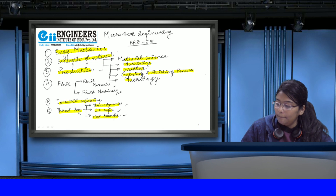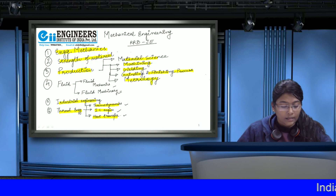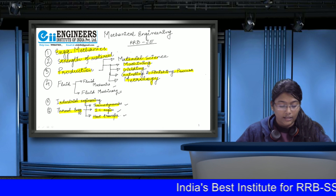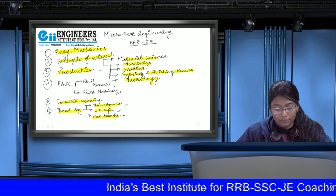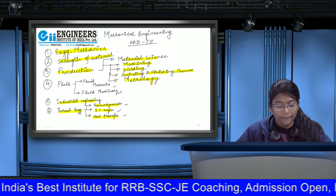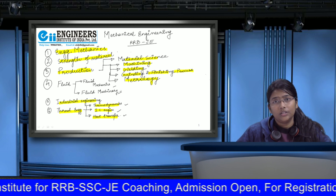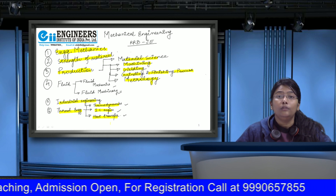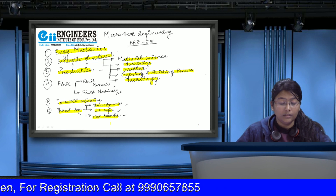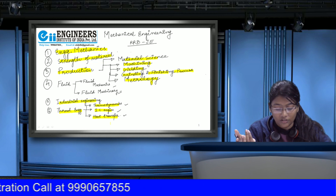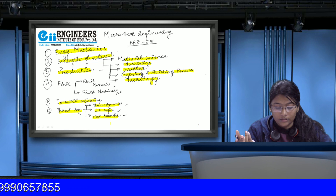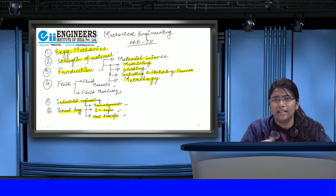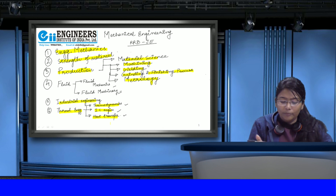In metrology, we have to study slip gauges, dial indicators, angle measurements, bevel protractor, sine bar, angle slip gauges, and mechanical, electrical, and optical measurement methods. We also have to see measurement of surface roughness and instruments like auto-collimators, interferometry, measuring microscopes, and interferometers.